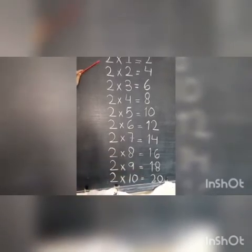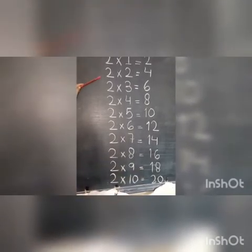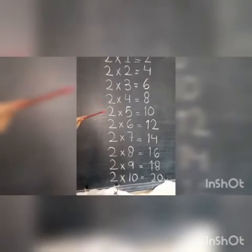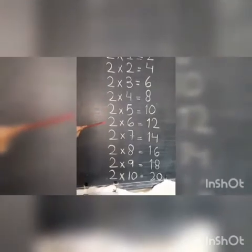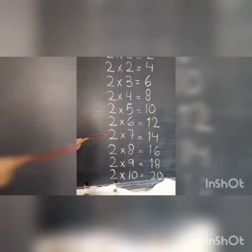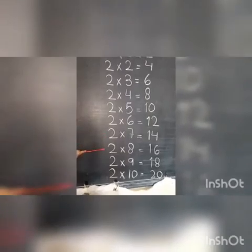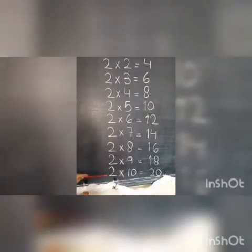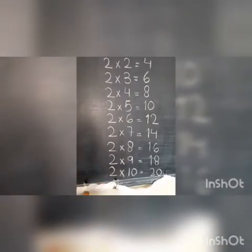Again: 2 times 1 is 2, 2 times 2 is 4, 2 times 3 is 6, 2 times 4 is 8, 2 times 5 is 10, 2 times 6 is 12, 2 times 7 is 14, 2 times 8 is 16, 2 times 9 is 18, 2 times 10 is 20.